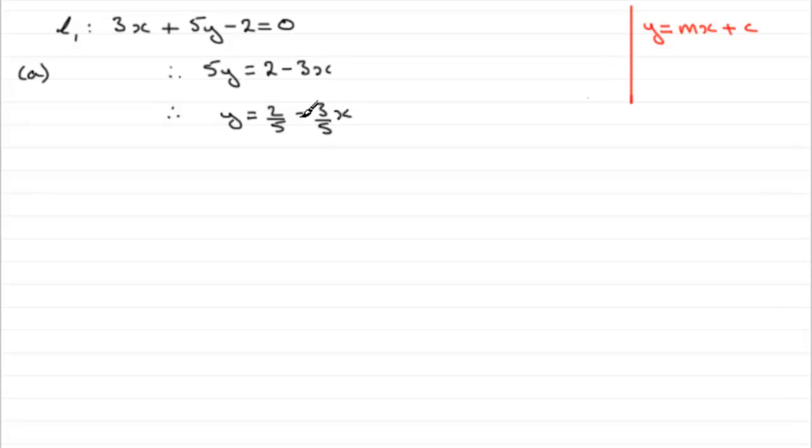And that gets it into this format. The m value in front of the x now is going to be minus 3 fifths. So it follows from this then that the gradient equals minus 3 fifths. The gradient of L1 equals minus 3 fifths.